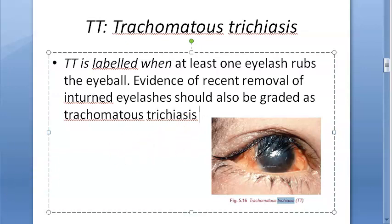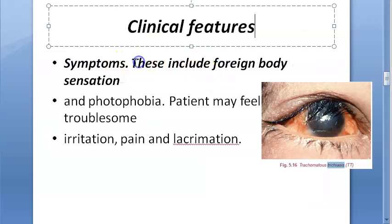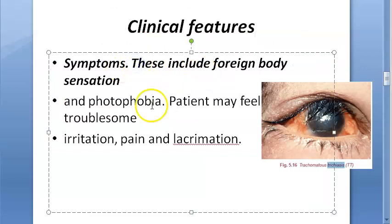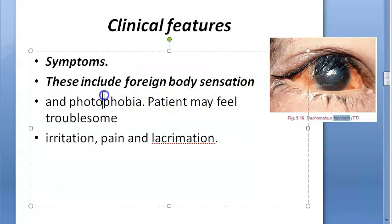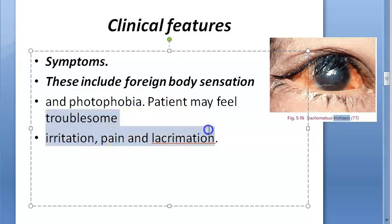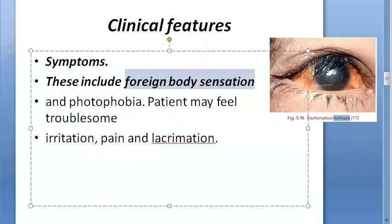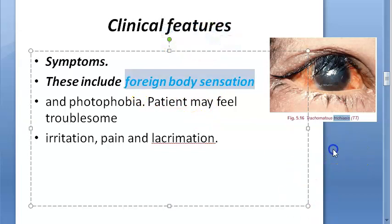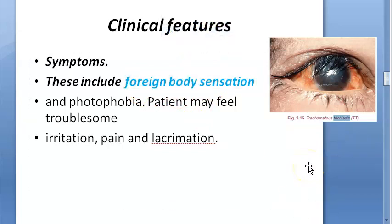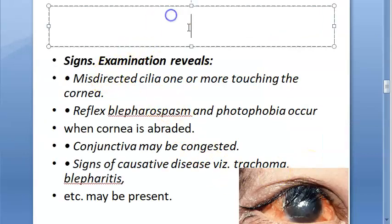The symptoms of trichiasis include a foreign body sensation in the eye, photophobia, troublesome irritation, pain, and lacrimation. Foreign body sensation is a very important symptom and may be one of the key answers when asked about the clinical features of trichiasis.